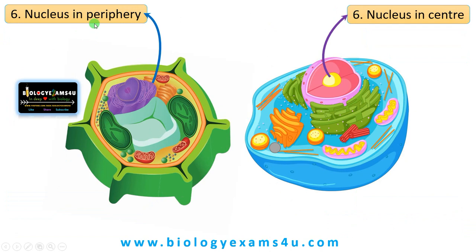Difference number 6: the nucleus is located at the periphery of the cell in plant cells because the vacuole occupies the central position. Whereas in animal cells, the nucleus is often at the center and is also the largest organelle present inside the animal cell. In plant cells, the vacuole is the largest organelle.